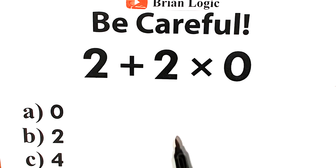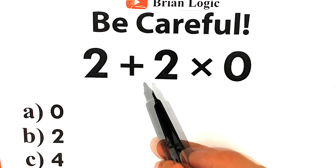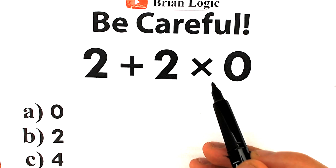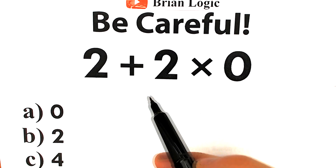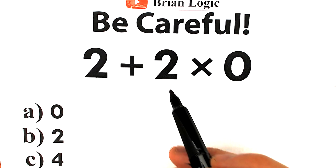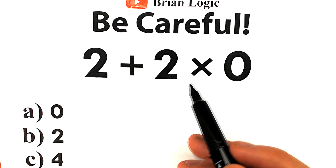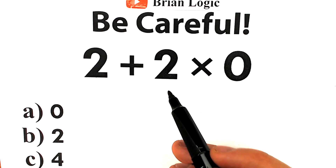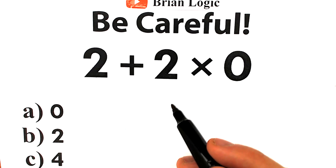Hello everyone, it might be the trickiest question you've ever seen. We have 2 plus 2 times 0. Seems pretty basic — it looks like the easiest question you've ever seen. We have addition, we have multiplication, so everyone learns this stuff in the third grade.